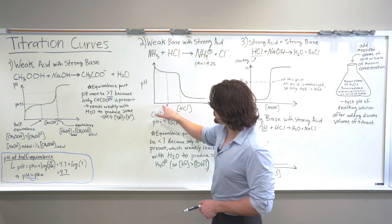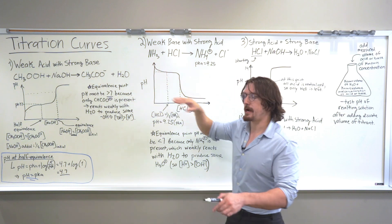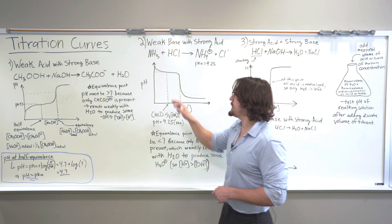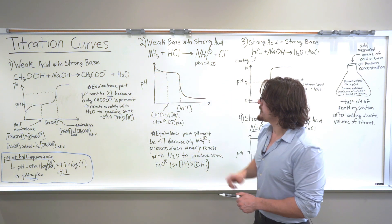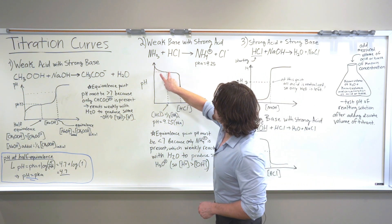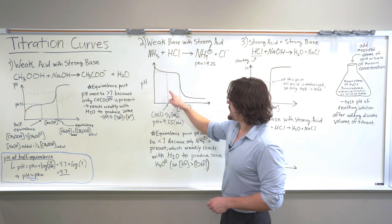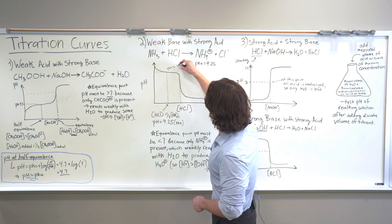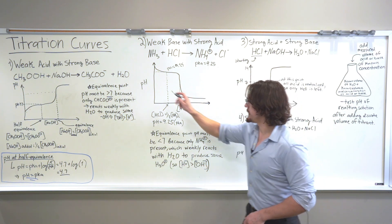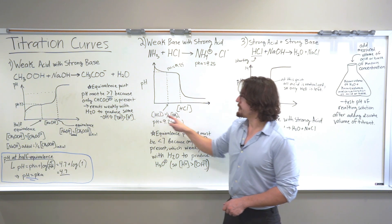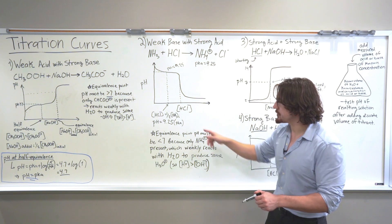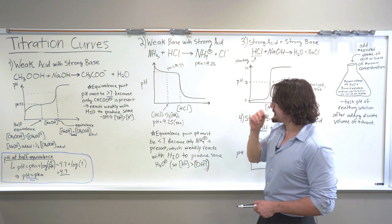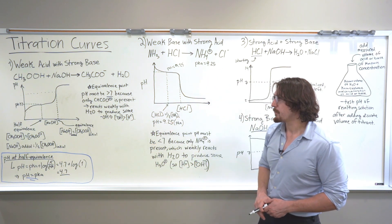Looking at these points: the half equivalence point is right here. We start with just a solution of ammonia — nothing has been added. It's a weak base, so it's going to react with water and produce some hydroxide ions, so the pH is going to be relatively alkaline. When we start adding hydrochloric acid, the pH will start to decrease but won't really decrease significantly — there's a clear buffer range. This is the half equivalence point, and the pH here is equal to the pKa, which is 9.25. This corresponds to where the amount of hydrochloric acid added equals one half the initial ammonia concentration, such that half of the initial ammonia has been converted into ammonium. When we plug that into the Henderson-Hasselbalch equation, we get that the pH equals the pKa.